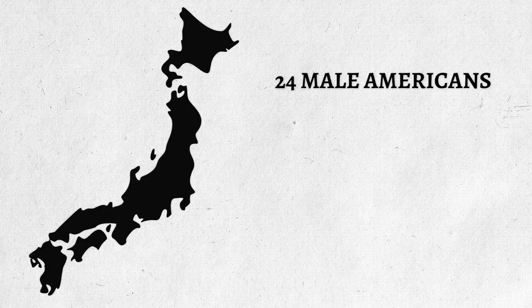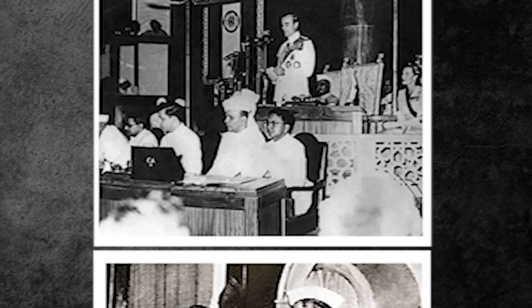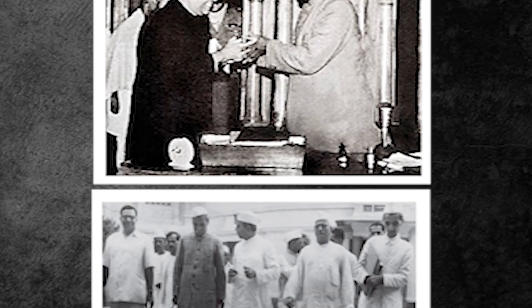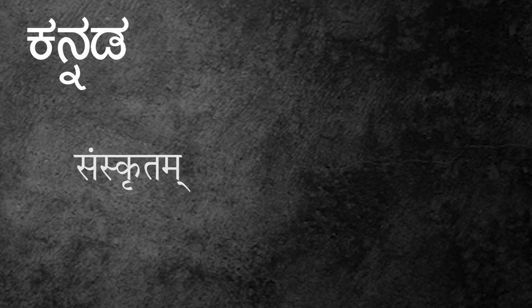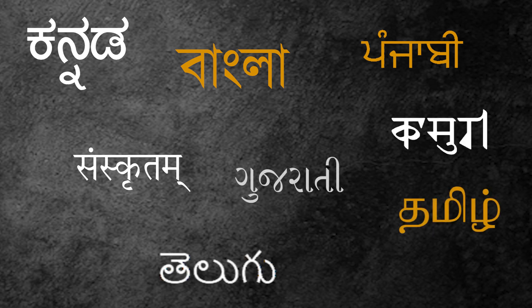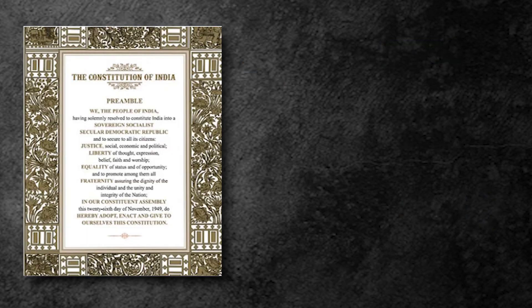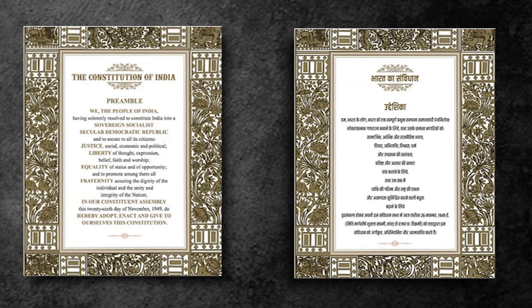It is worth noting that the constitution of Japan was written by 24 male Americans in 7 days flat, and the only Japanese in the room was a young woman interpreter. While the decision to write the constitution ourselves was a noble one, in reality it was quite difficult to implement. For example, with members speaking so many languages, it was difficult to even agree on the language for discussions. It was agreed that members could speak in any language they wanted, and the constitution would be written in English and translated into Hindi.